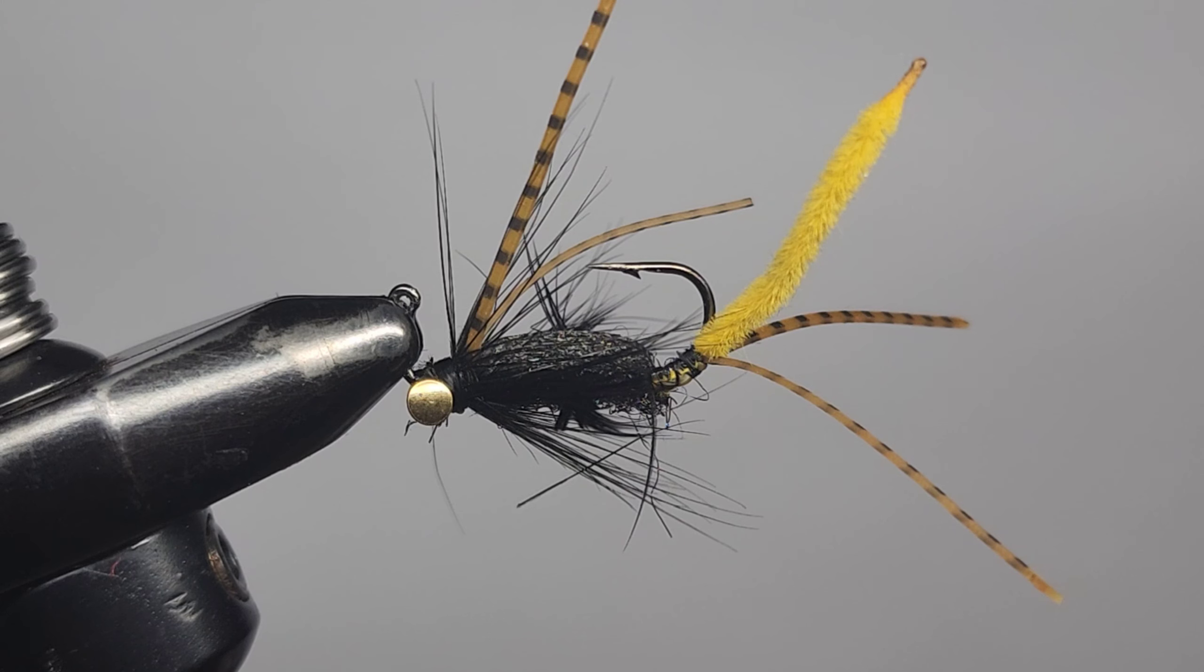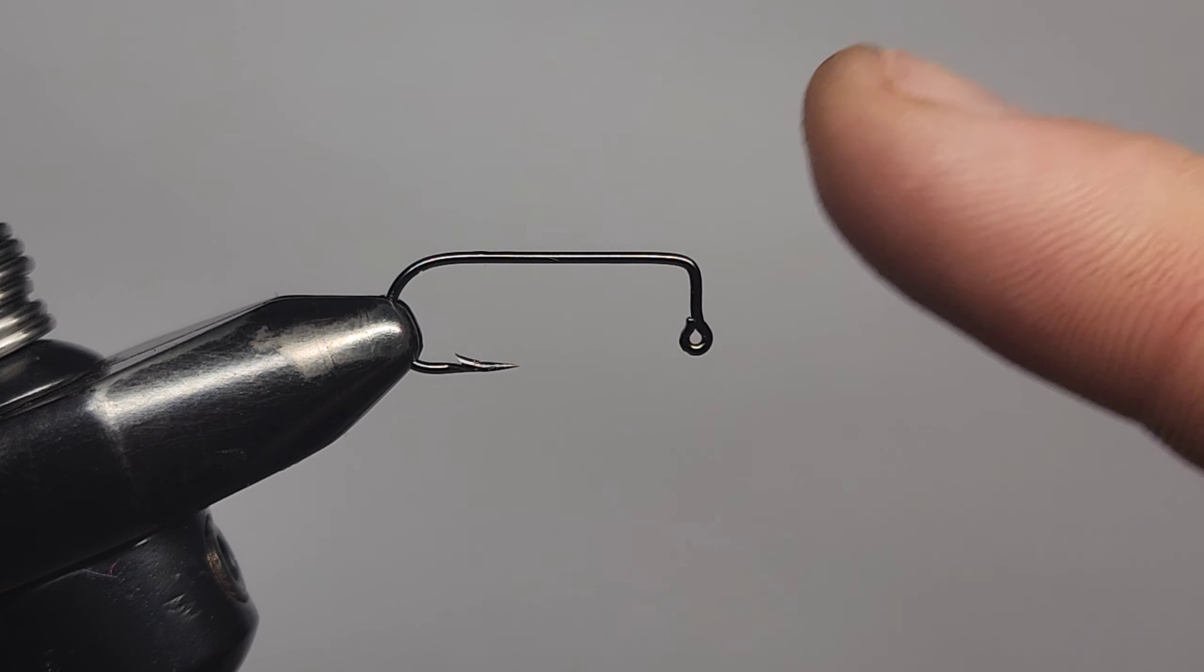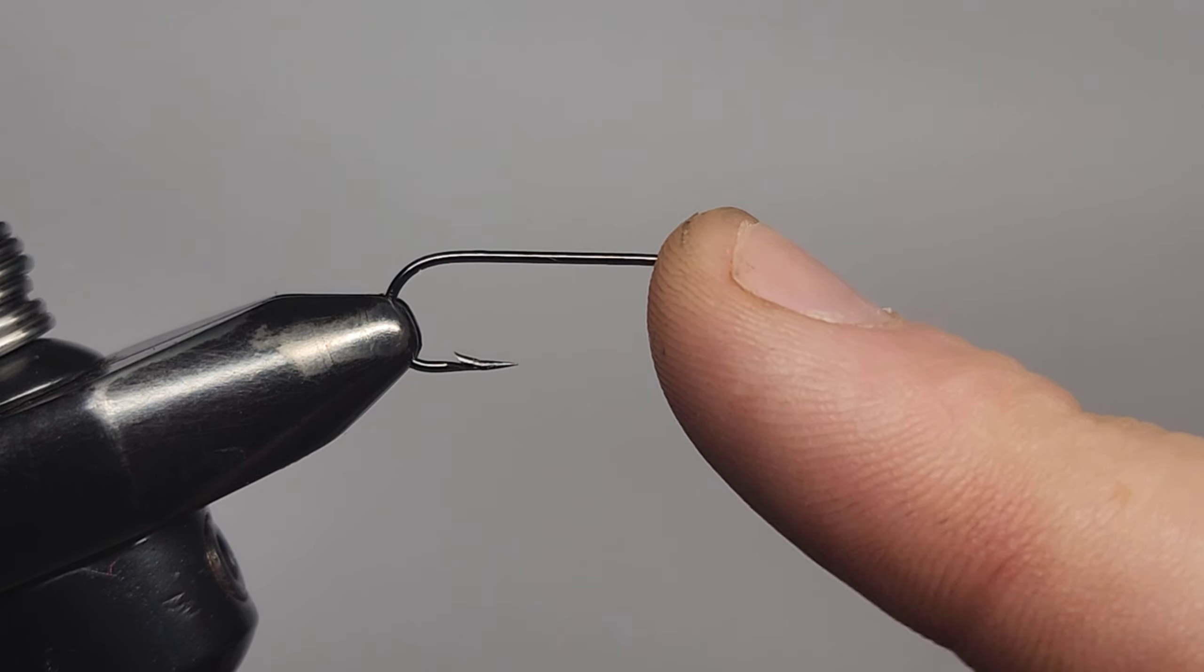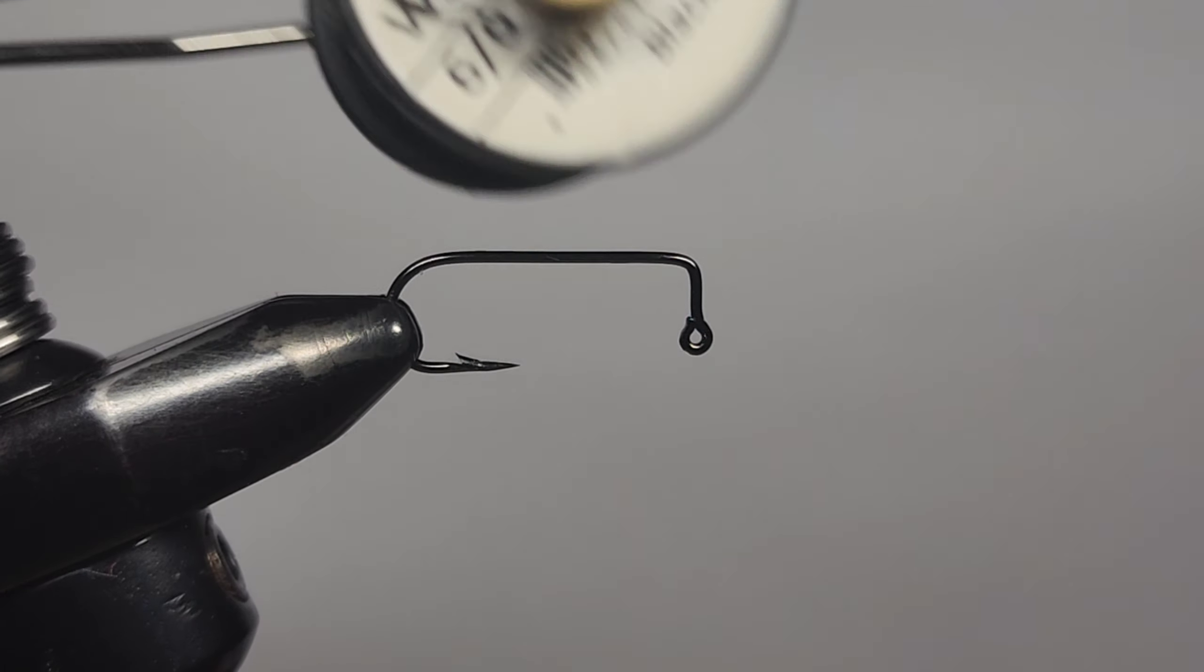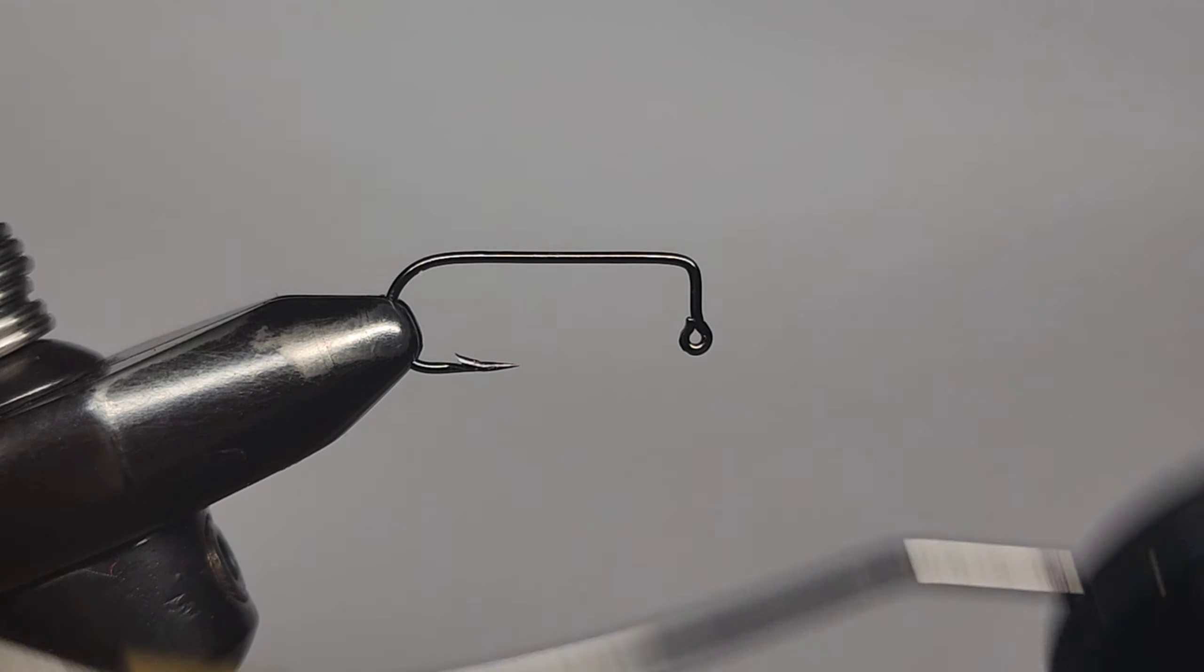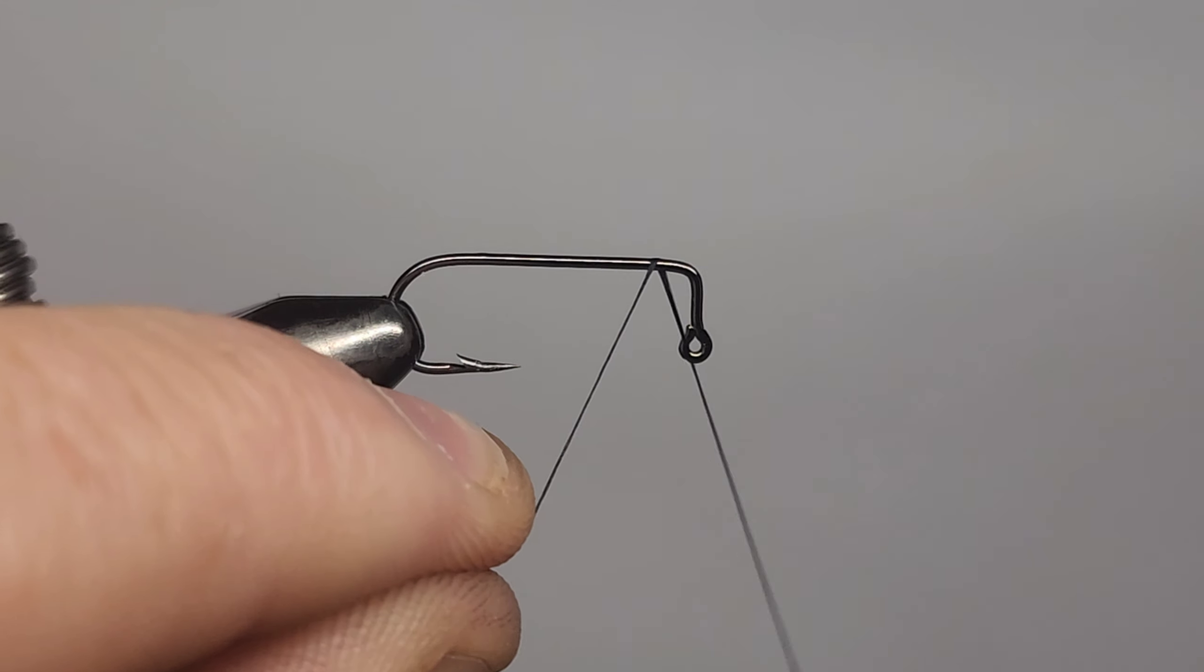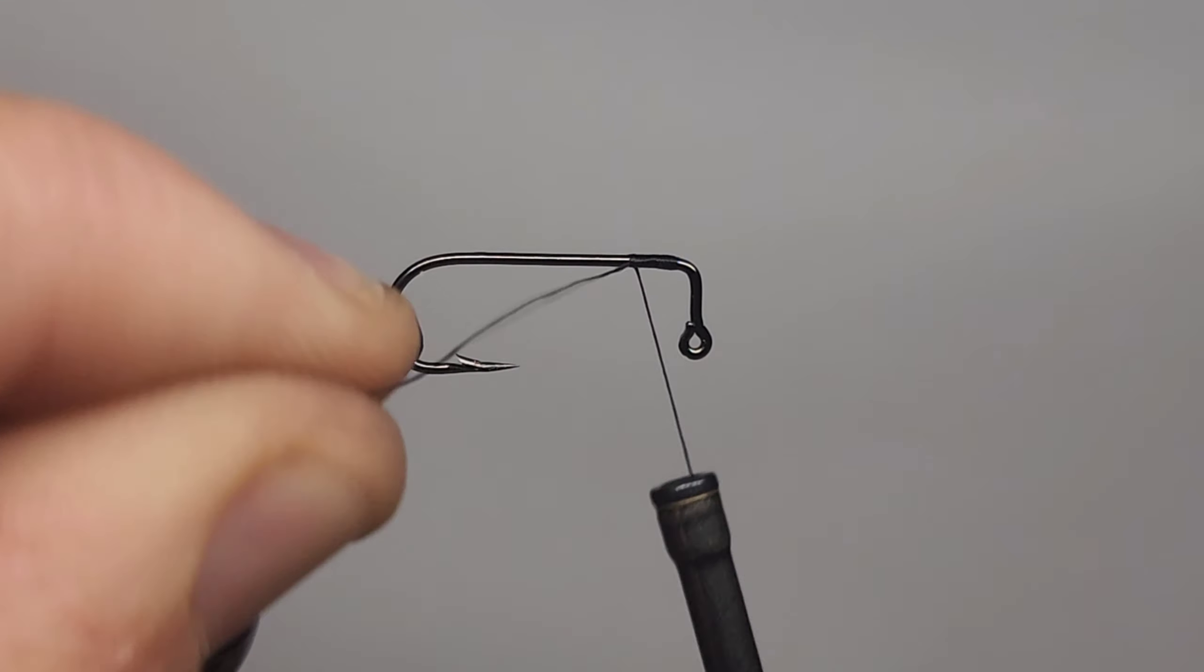But for now we're just going to crack on with tying it. The hook I'm using is a 90 degree jig hook in size 6 or 8. Either one will work fine. The thread I'm using is a Semperfli 6-0 waxed thread in black. I start off by tying a thread base at the front of my hook there.